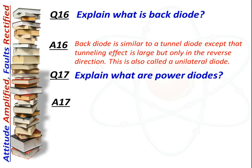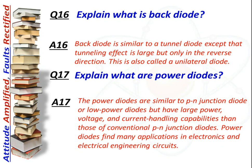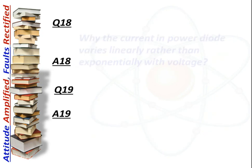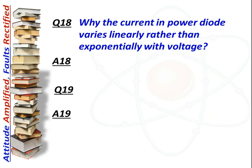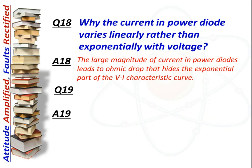Next question: What are power diodes? Answer: Power diodes are similar to PN junction diodes but have large power, voltage, and current handling capabilities compared to conventional PN junction diodes. They find many applications in electronics and electrical engineering circuits. The current in power diodes varies linearly rather than exponentially with voltage, and the large magnitude of current leads to an ohmic drop that hides the exponential part of the V-I characteristic curve.